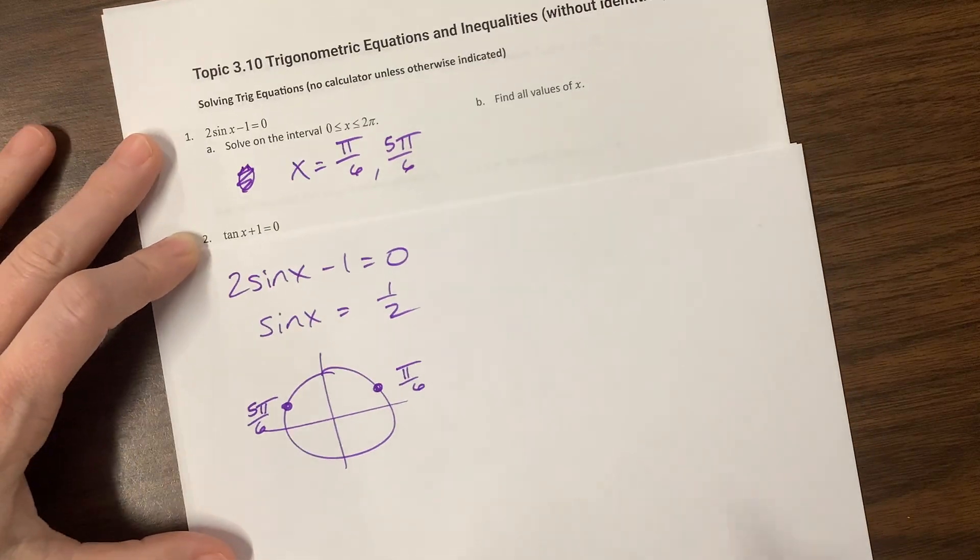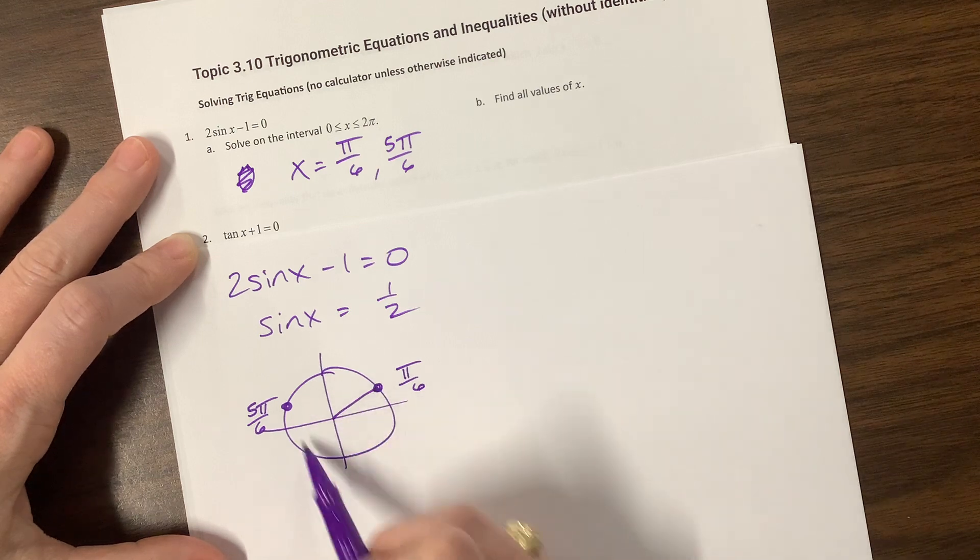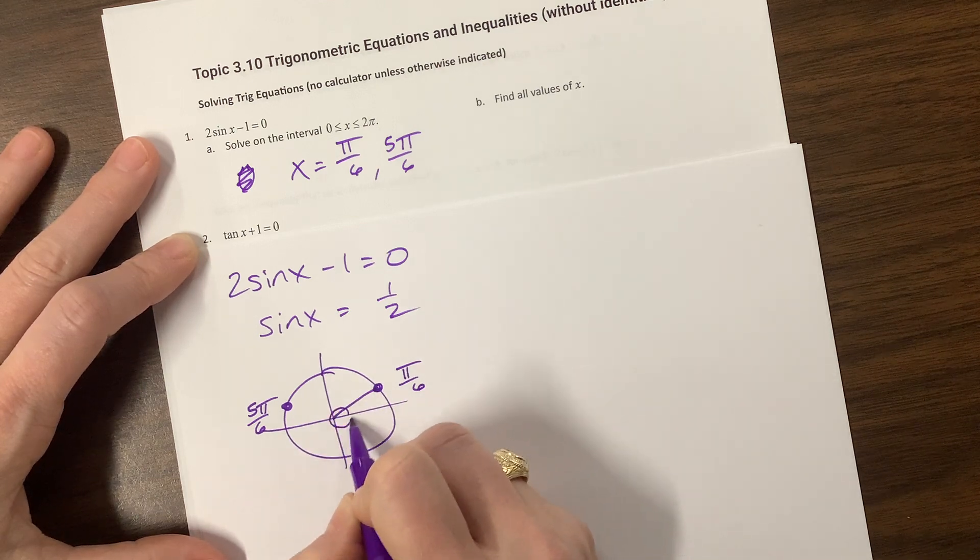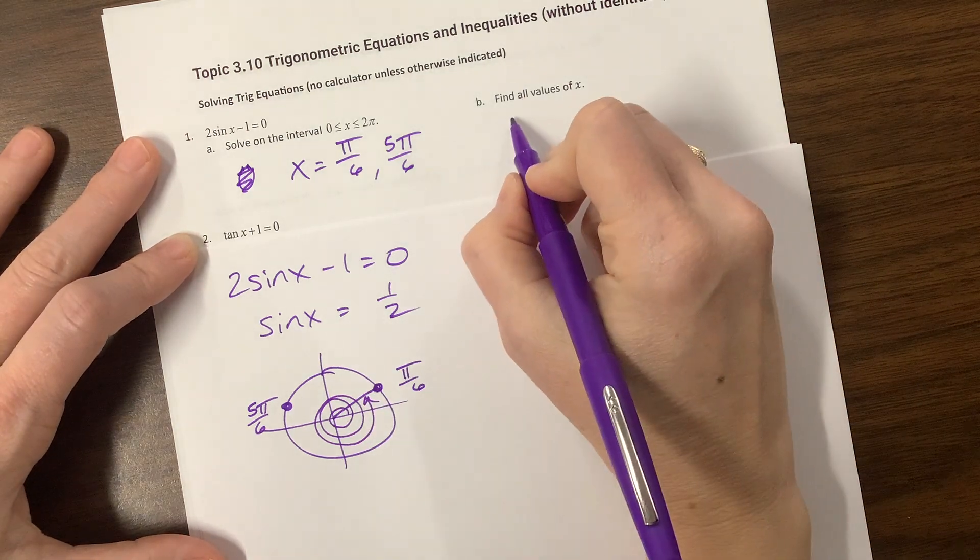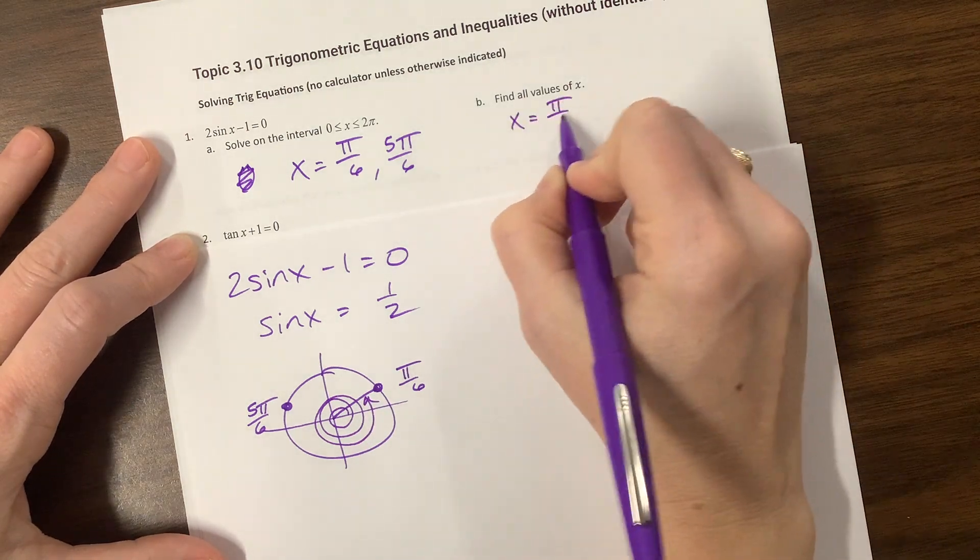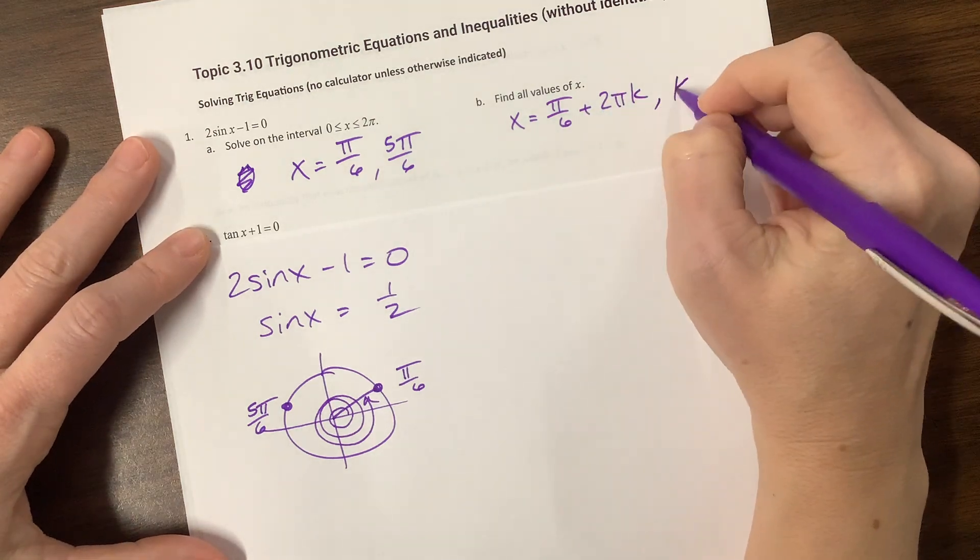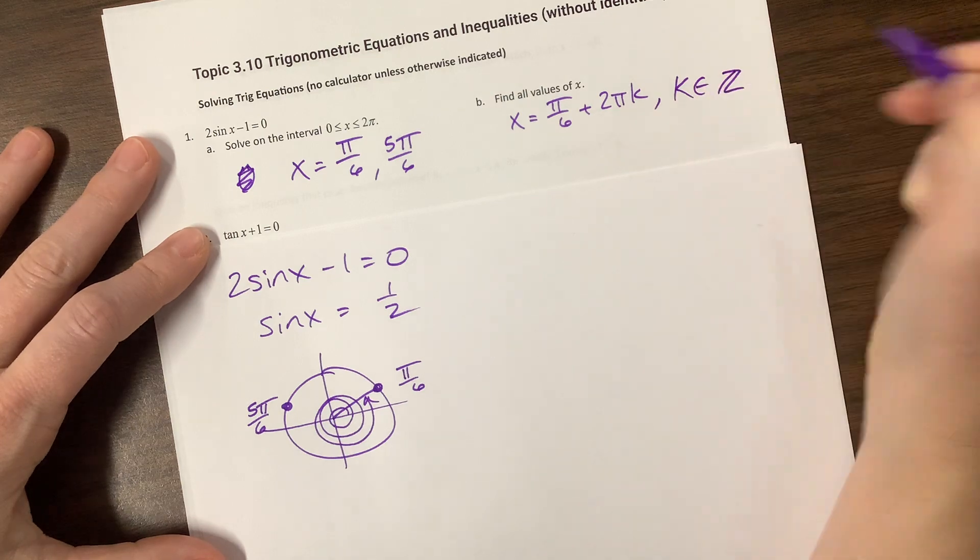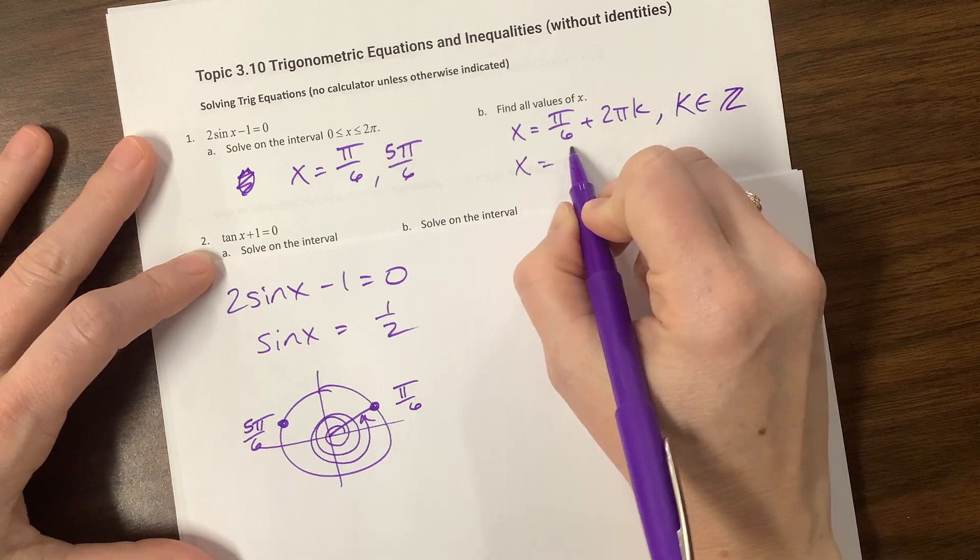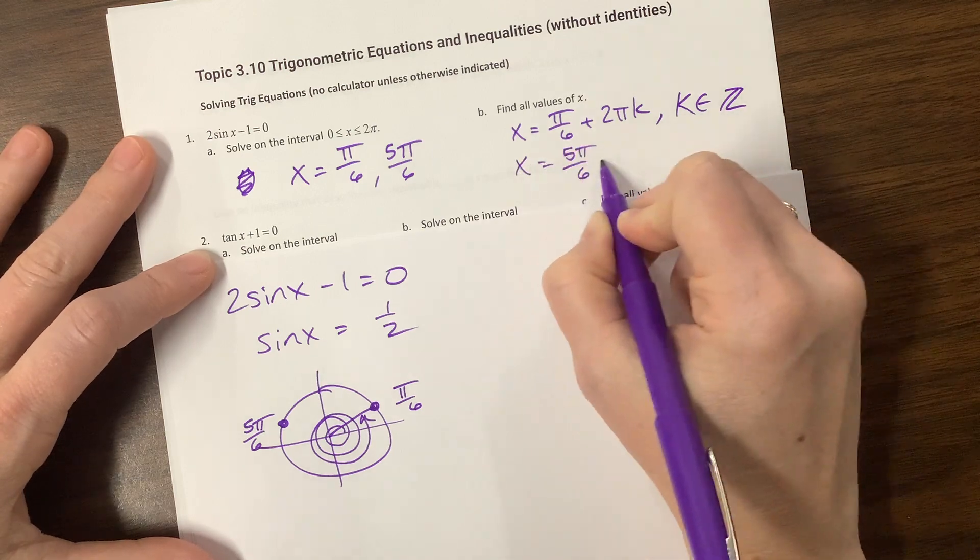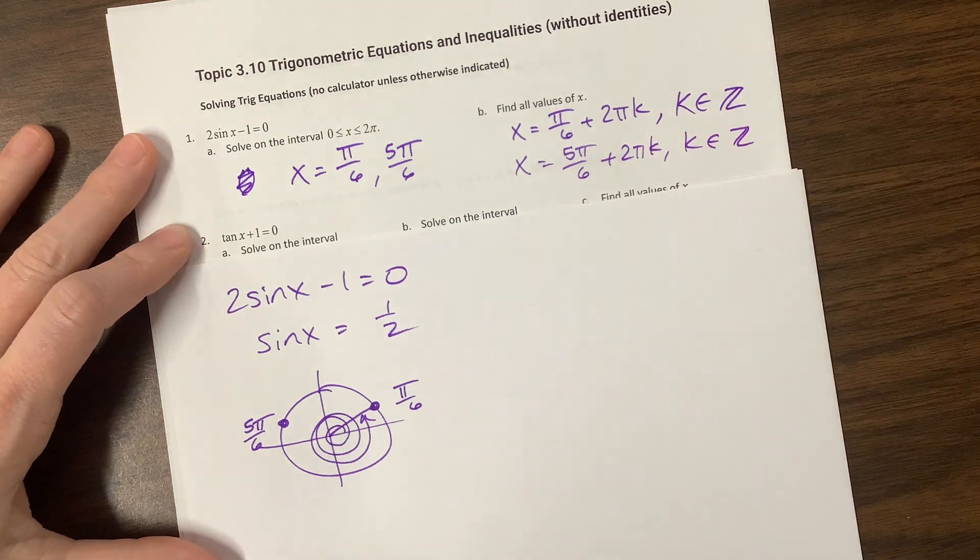Then it could also say find all values. Well, if you keep in mind, we can go around, we have all these coterminal angles, so I could start here and go around and around. So what we'll say is that x = π/6 + 2πk, that represents each rotation, where k is an element of the integers. And then the other one is 5π/6 + 2πk, where k is an element of the integers.